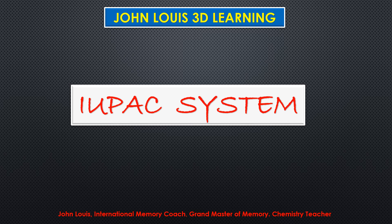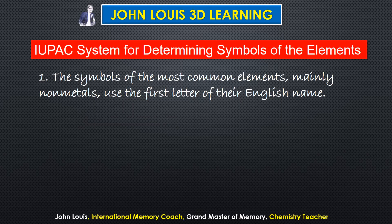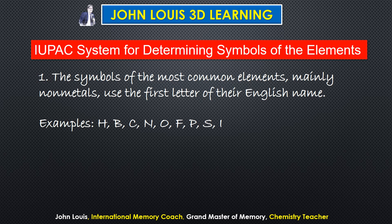IUPAC is a governing body for the entire world. The first rule is: symbols of most elements, mainly non-metals, use the first letter of their English name. For example, hydrogen — H, oxygen — O. Examples include hydrogen, boron, carbon, nitrogen, oxygen, fluorine, phosphorus, sulfur, and iodine.